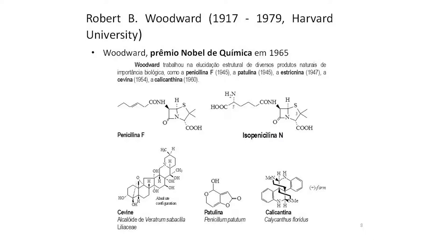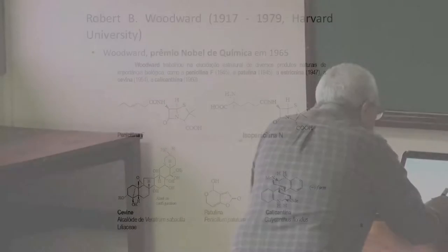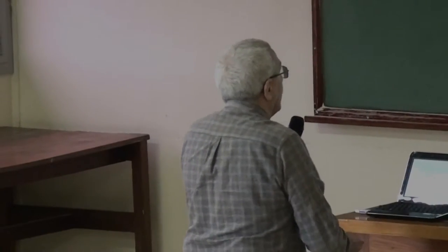Outro pesquisador extremamente importante, que viveu de 1917 a 1979, todo mundo conhece, inclusive participou das obras de fronteira. Tem a regra dele no ultravioleta para calcular a absorção. Dedicou-se a esse tipo de substância, inclusive as penicilinas, que foram extremamente úteis para a vida humana. Foi prêmio Nobel em 1965, e naquela época as elucidações estruturais não tinham a facilidade que nós temos hoje.